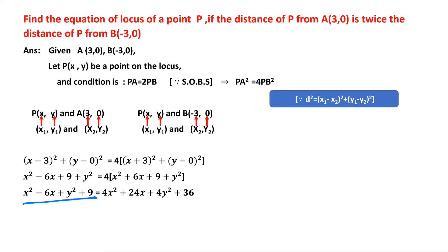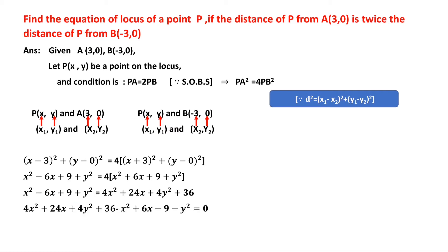Transposing all terms to the right-hand side: 4x² - x² gives 3x², and 4y² - y² gives 3y². For the x terms: 24x - (-6x) = 30x. Constants: 36 - 9 = 27.